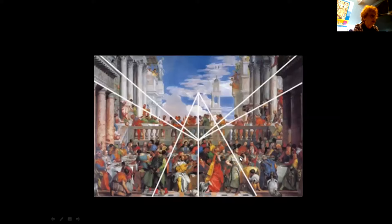He uses two vanishing points. One where they all coalesce at the head of Christ, used for that part of the painting, and another vanishing point used for all the rest of it. By using two vanishing points — which aren't obvious when you look at it close up — he's managed to incorporate all of this without making it look as though it bends or is too crowded.